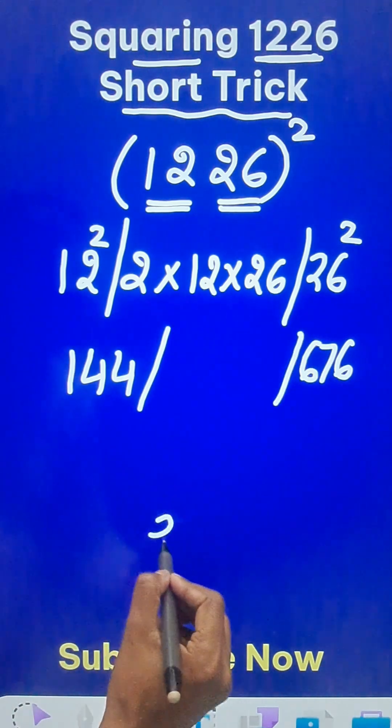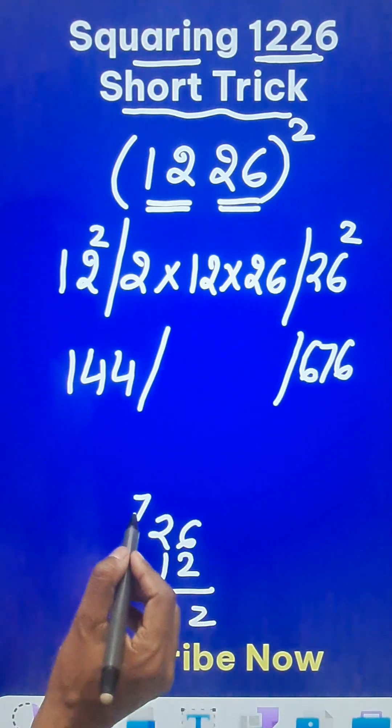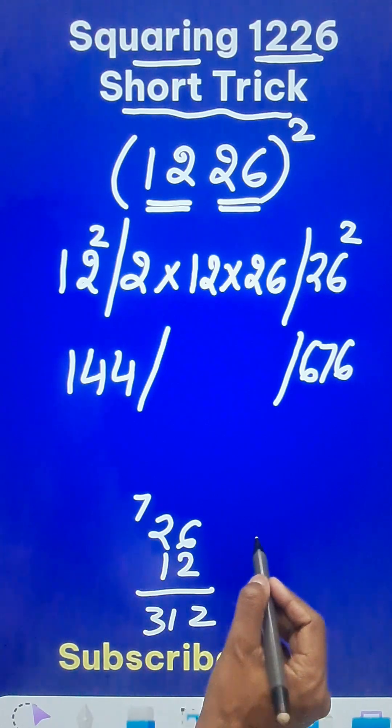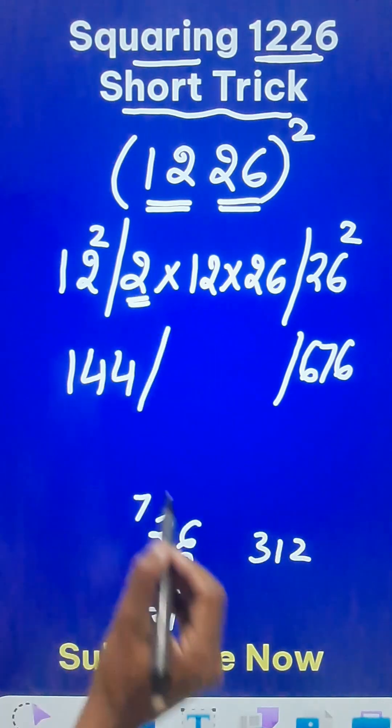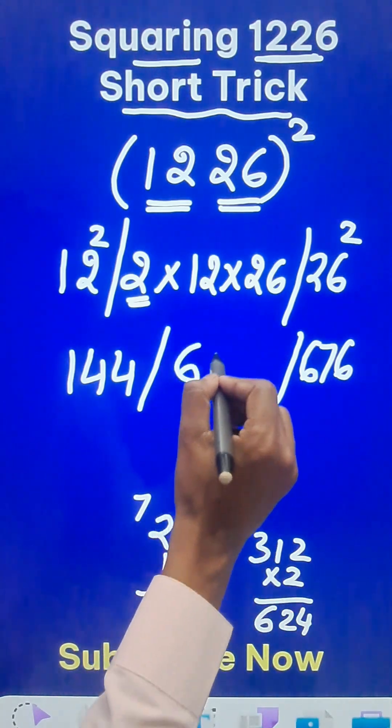Likewise, 26 into 12 will be 12, 6, 7, 2 to 7 carry, and 24 plus 7 is 31. Now 312, the double of 312 is 624, which you have to write in the middle here.